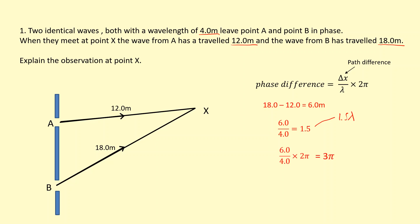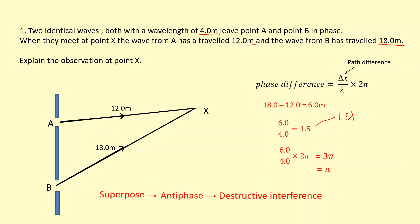Since the path difference is 1.5 wavelengths — an odd multiple of half a wavelength — this is going to be destructive interference. The phase difference is 3π, which is equivalent to π since you can subtract multiples of 2π, meaning they're in antiphase. So the waves superpose at X in antiphase, leading to destructive interference, and the observation at X will be a minimum. If this was sound, you'd hear nothing; if it was light, you'd see nothing.